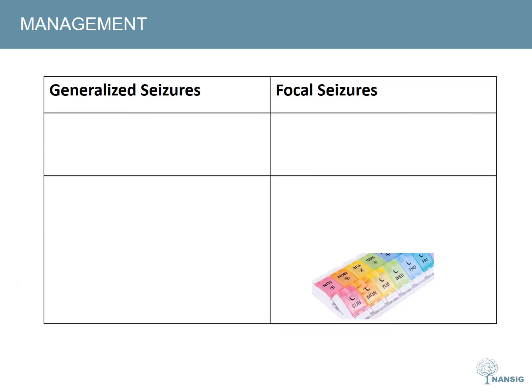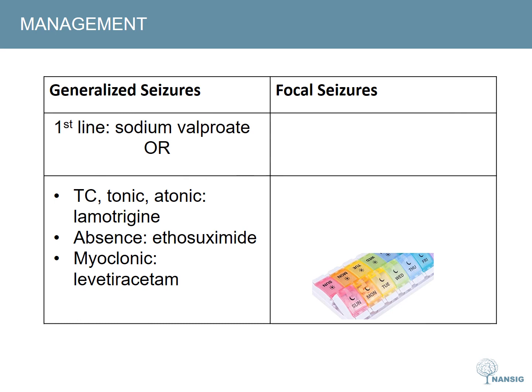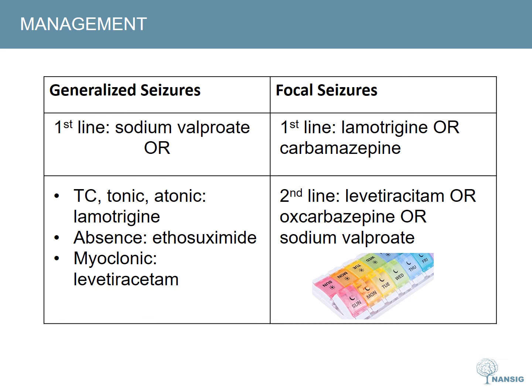Medication-wise, a variety of anti-epileptics can be used and they each come with their own side effect profile. In generalised seizures, first-line treatment includes sodium valproate. However, if the patient is of childbearing age, you should not prescribe sodium valproate as it has teratogenic effects. Therefore, other first-line medications include lamotrigine for tonic-clonic, tonic and atonic seizures, ethosuximide for absent seizures and levetiracetam for myoclonic seizures. For focal seizures, first-line management is lamotrigine or carbamazepine, and second-line is levetiracetam, oxcarbazepine or sodium valproate.